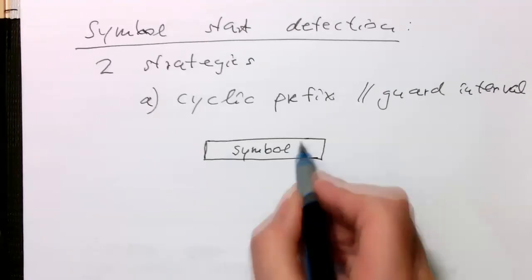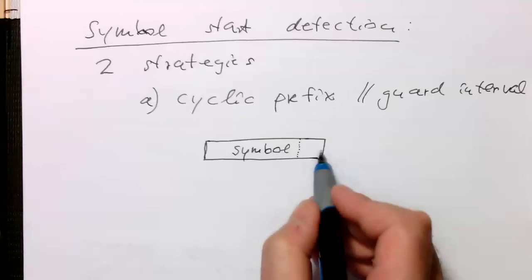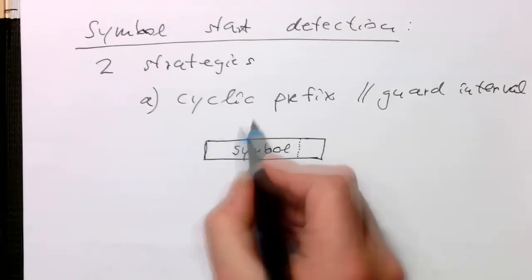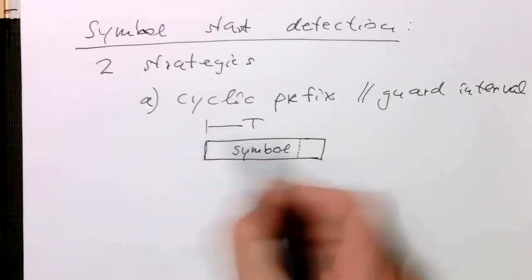Now what we do is, we just look at the last couple of samples here, at this section. The whole thing is obviously long T. That's T.